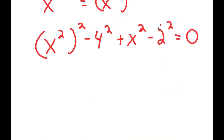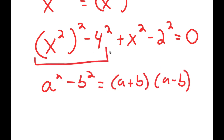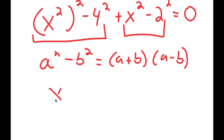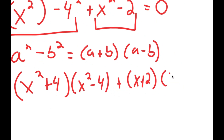Notice how everything is in the power of 2. If I have something in the form a squared minus b squared, this is equal to a plus b times a minus b. We're going to use this difference-of-squares property on these two groups. So I first get x squared plus 4 times x squared minus 4, plus x plus 2 times x minus 2, equals 0.